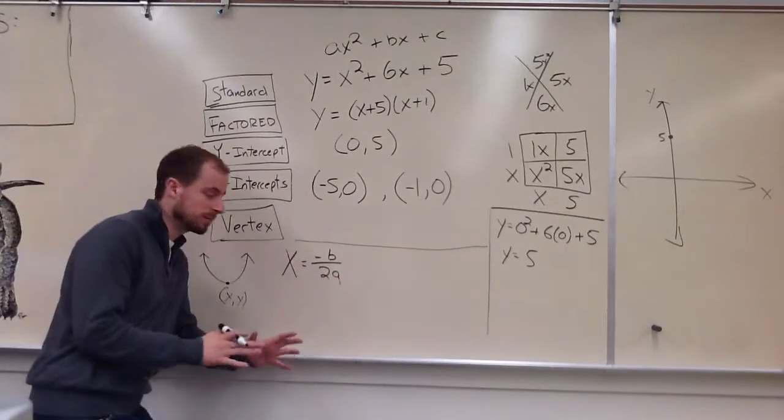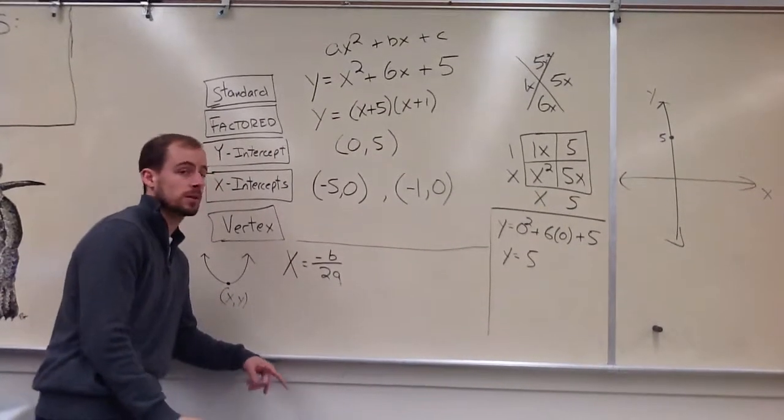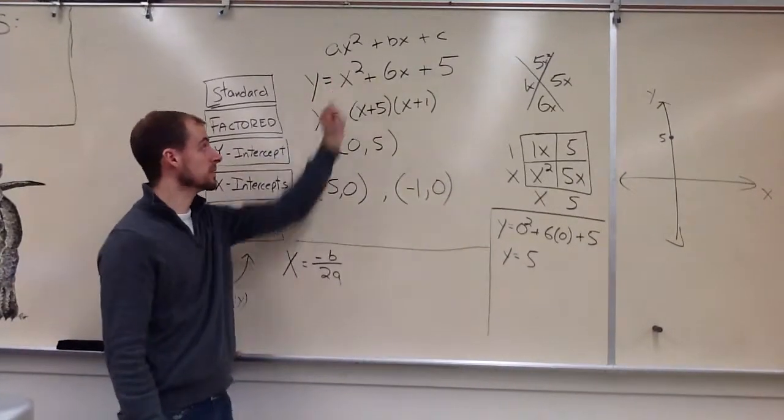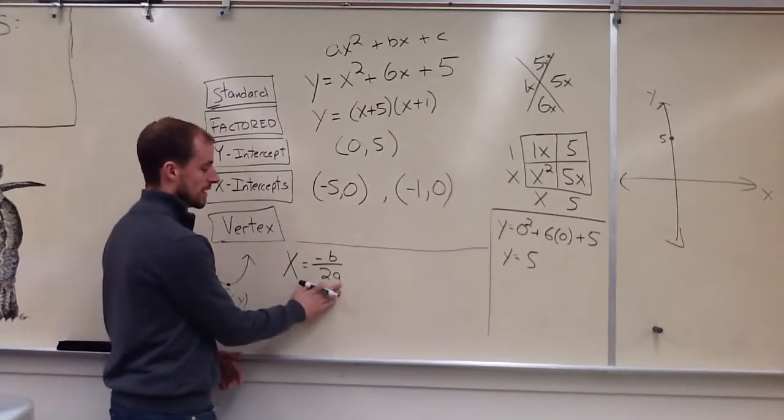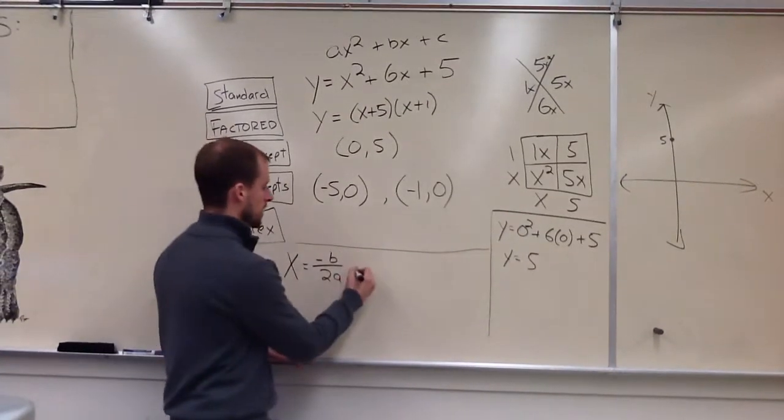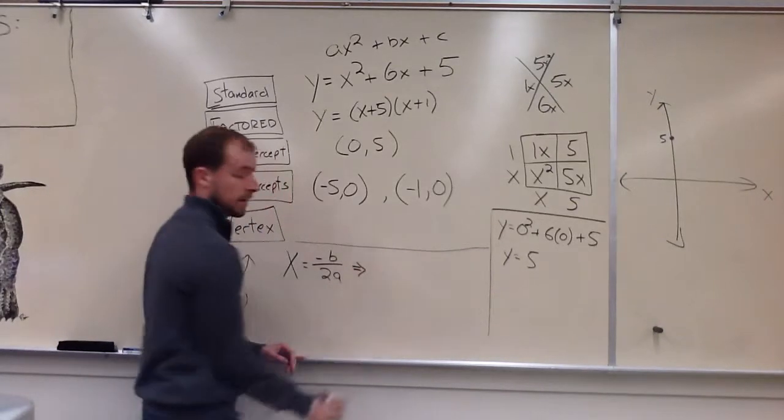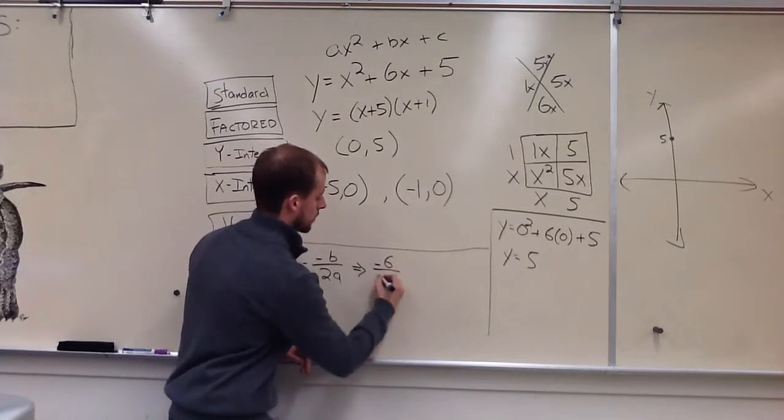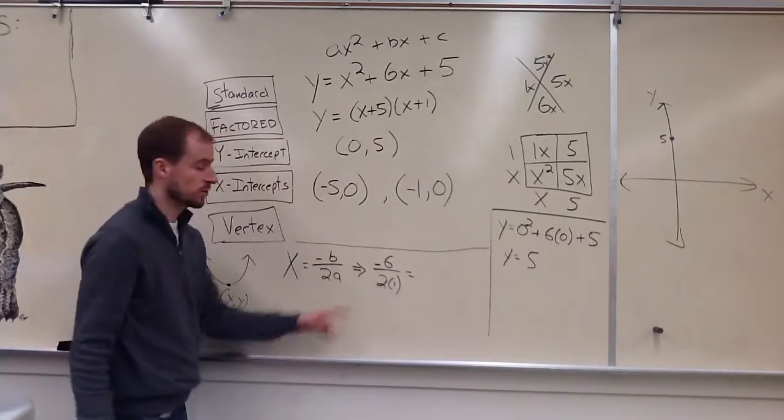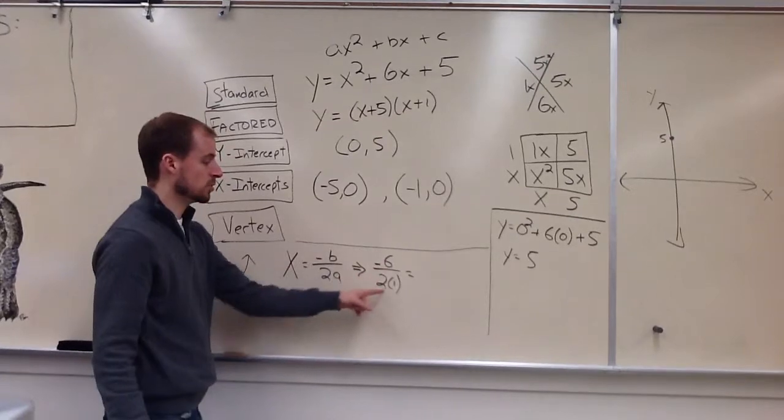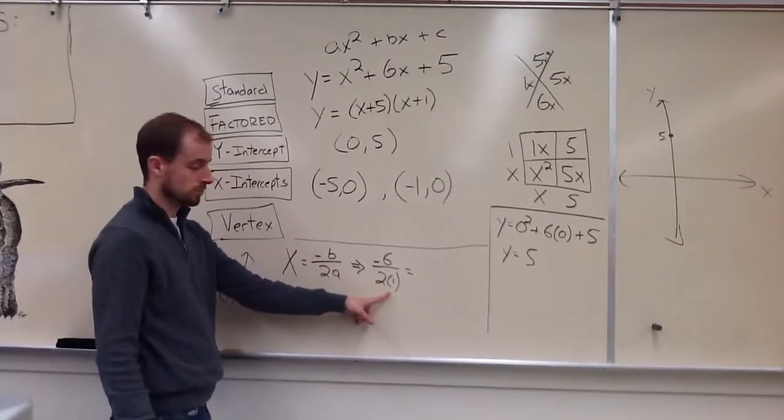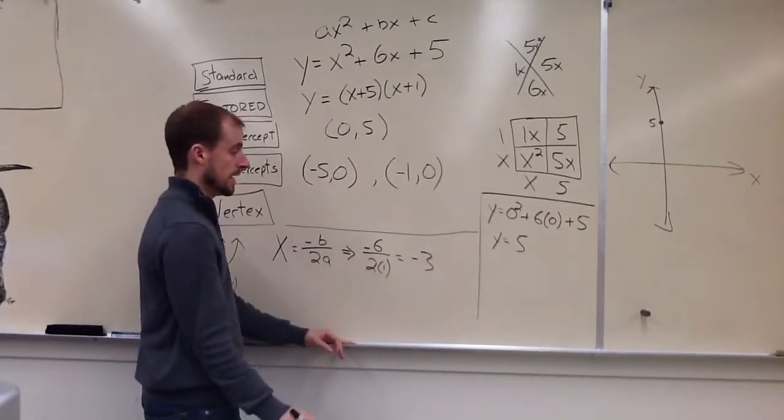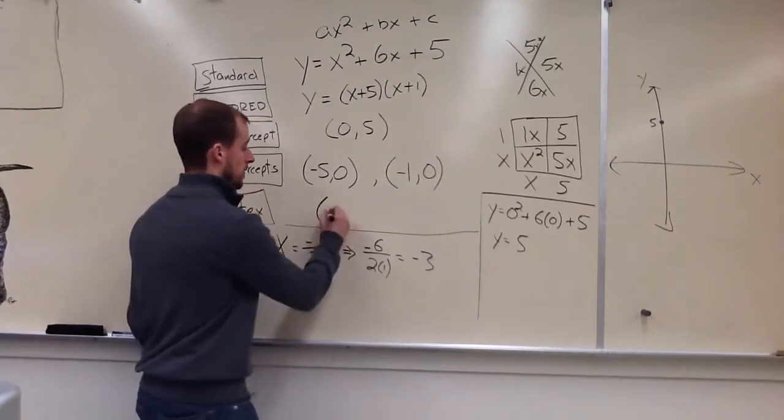My x... That point, the vertex, is going to be negative b over 2a. Now, think about it. Where would b and a come from? Where are those just letters from? Well, back up there, ax squared plus bx plus c. What's our a, b, and c? We actually don't even need c. We need b and a. b was 6. So, I'm going to write it for our formula. It's going to be negative 6 over 2 times 1. So, negative 6 divided by 2 times 1. 2 times 1 is 2. So, negative 6 divided by 2 is negative 3. That's our x coordinate for our vertex.